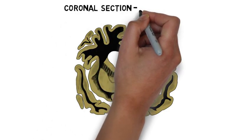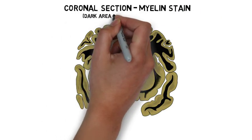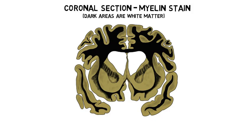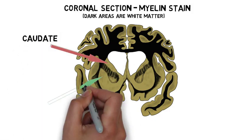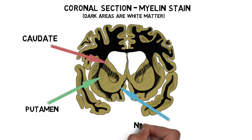Striatum is a term used to collectively refer to a small group of structures found below the cerebral cortex. These structures consist of the caudate, putamen, and nucleus accumbens.